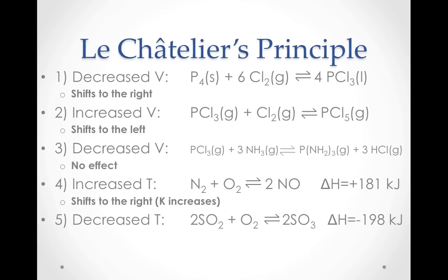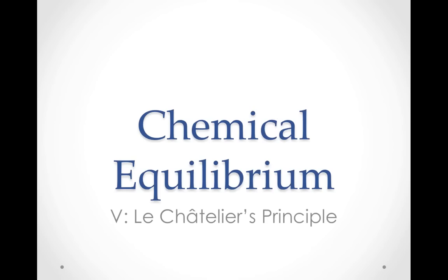How about number 5? Lowering the temperature for this one would shift this exothermic reaction to the right as well, giving a higher value for K. Thank you for watching this video on Le Chatelier's Principle. Watch it again if you have trouble with this concept or review the appropriate pages in your textbook. Leave a comment below if you have any questions.